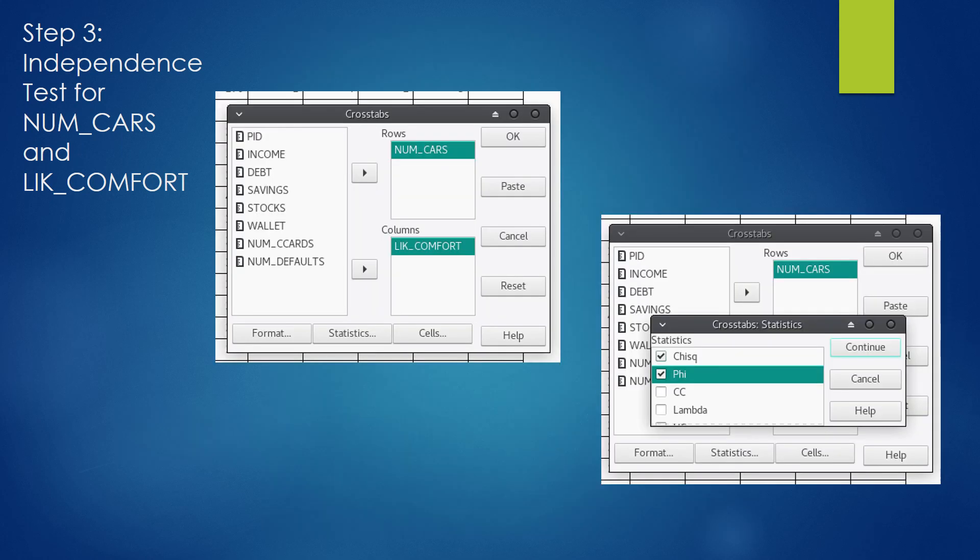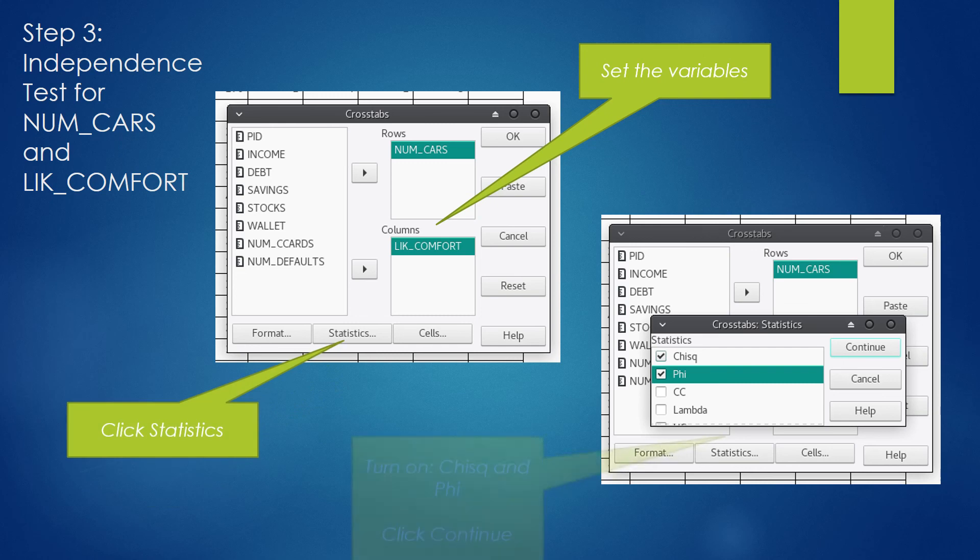After clicking the window, you will get the crosstabs box. The crosstabs box is actually PSPP's way of saying Chi-Squared Test. What you have to do is place NumCars and LitComfort into the rows and columns as you see here. After you do that, click the Statistics button and turn on Chi-Squared and Phi. Phi is a little deceptive. It's actually Kramer's V. Some older statisticians call Kramer's V by the Greek letter Phi. Once you work through all three steps, click Continue and Continue On.